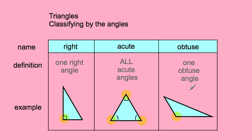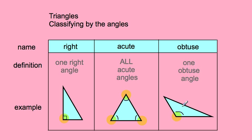The last classification by angles is an obtuse triangle. That's when you have one obtuse angle in your triangle — a more than 90-degree angle. The other angles are going to be acute. You're not looking for three obtuse angles — that's also impossible in a triangle. We're just looking for one obtuse angle.